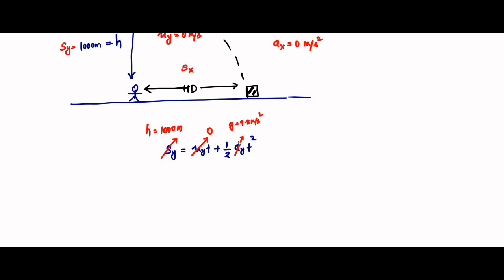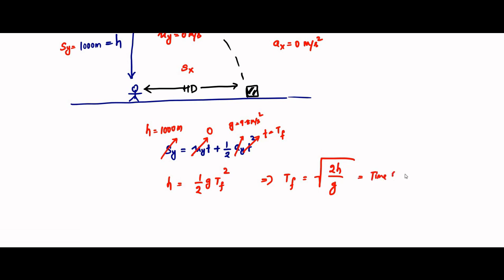For the vertical displacement, the time covered equals the time of flight. Using H = ½·g·Tf², we get Tf = √(2H/g) — this is the time of flight formula. That equals √(2 × 1000 ÷ 9.8), which comes out to approximately 14.285 seconds, or 14.3 seconds. This is the time of flight.